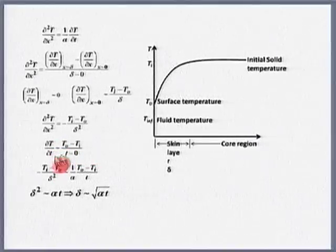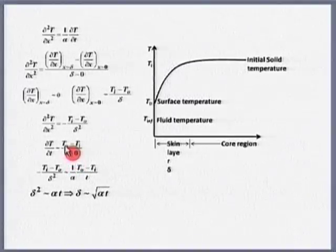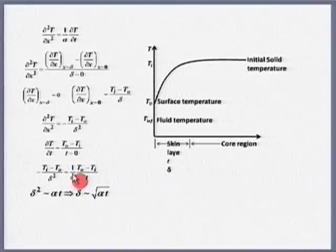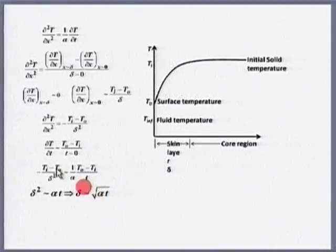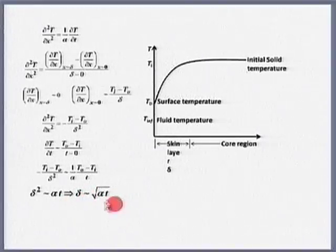Now let us come to ∂T/∂t. This is of the order of (T_0 − T_i)/t — initially it was T_i when time is zero, but after passage of time t it has become T_0. Substituting these orders of magnitude, (T_i − T_0)/δ² ~ (1/α) · (T_0 − T_i)/t. Absorbing the minus sign, the numerators vanish and I get δ² ~ αt, so δ is of the order of √(αt).